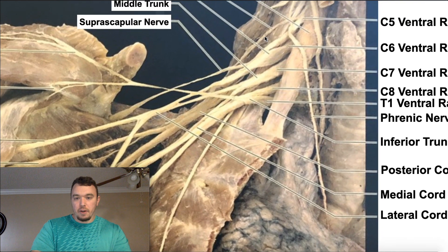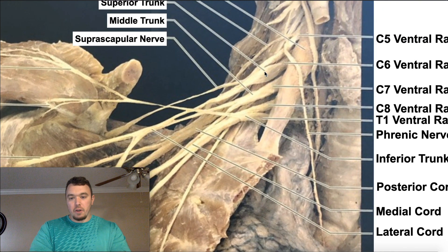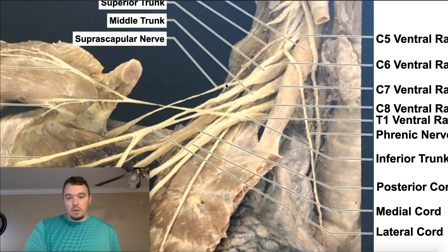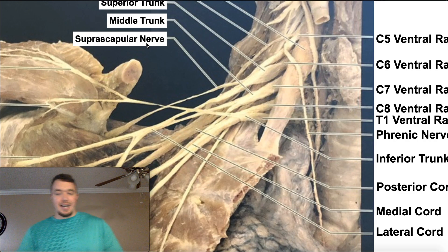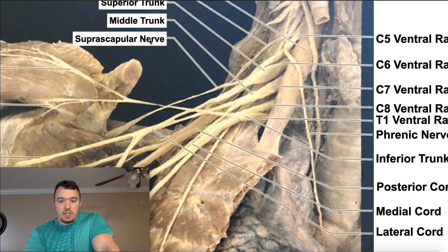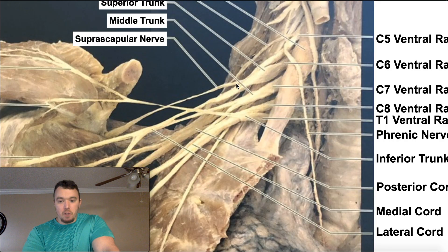Let's find the superior trunk. Here's the superior trunk — or upper trunk — and if we look, here's a nerve coming off of that: this is your suprascapular nerve, the first nerve coming off the superior trunk. The nerve to subclavius will also be there, but you can't really see it too well in this picture — it's a very small muscle — but you'd also have that nerve to subclavius.